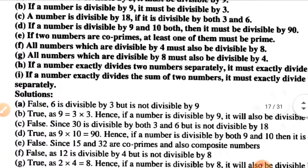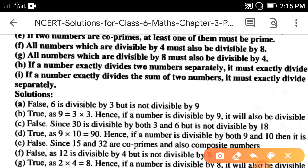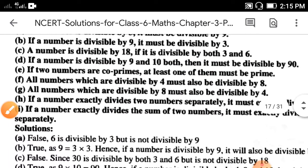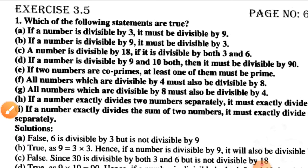Suppose that number is 6. 6 is divisible by 3, but is 6 divisible by 9? No, it is not possible — you will get the number in decimal form. So it is false. 6 is divisible by 3 but not divisible by 9.